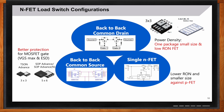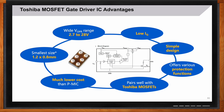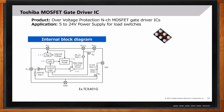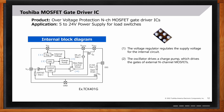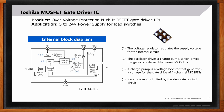Toshiba offers a variety of MOSFETs and FETs to drive IC applications, focusing on low quiescent current, a wide range of operating voltages, package sizes, low cost, and various protection functions. In this block diagram you see a driver IC working as a charge pump. The voltage regulator regulates the supply voltage for the internal circuit; the oscillator drives a charge pump, takes the voltage from the regulator, increases it, and feeds it to the V-gate, biasing it based on V-in and V-source, driving the gate of the external N-channel MOSFET. Inrush current is limited by the slew rate control circuit.